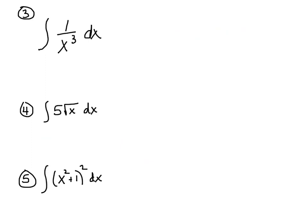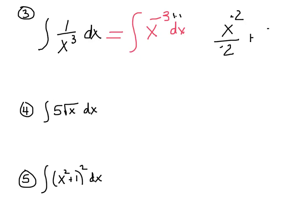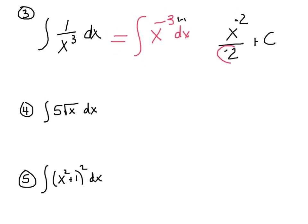Question 3: the integral of 1 over x cubed. We don't have a rule for a fraction, so we rewrite it as x to the negative 3rd dx. Now apply the rule — add 1: negative 3 plus 1 is negative 2, divided by negative 2, plus c. We always clean up negative exponents: rewrite as negative 1 half times 1 over x squared, plus c.